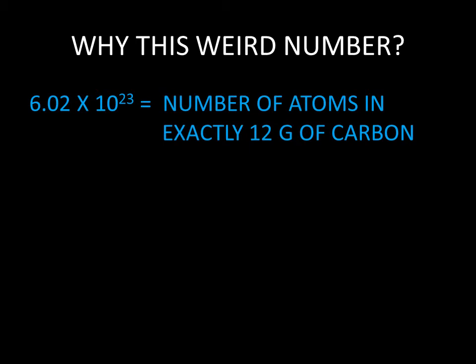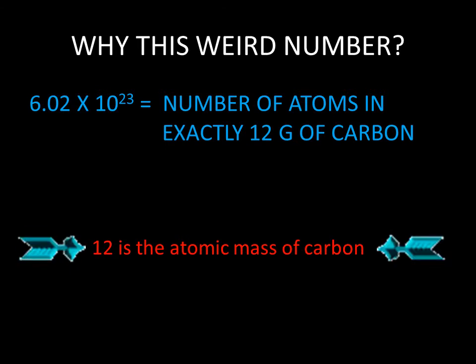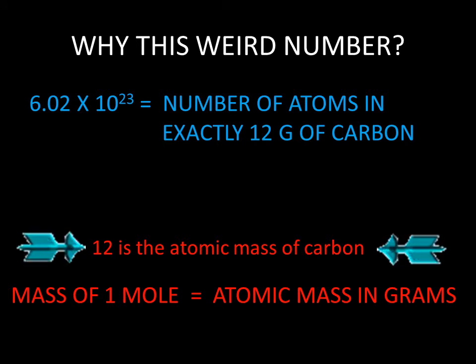So why did chemists pick this weird number, this six by ten to the twenty-three? That's because it's exactly equal to the number of atoms in twelve grams of carbon. And coincidentally, twelve is the atomic mass of carbon.